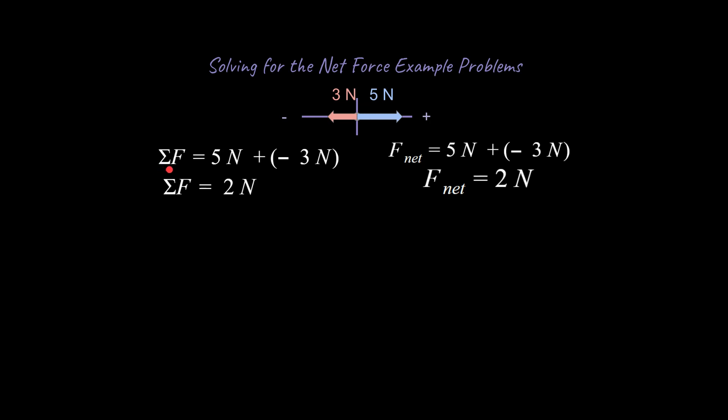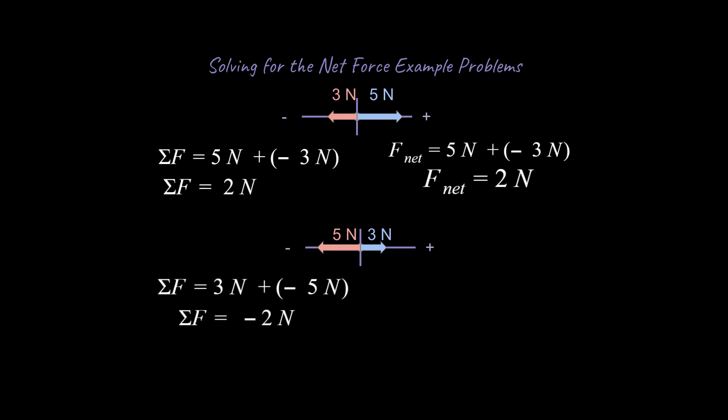The sigma symbol just means 'the sum of' — so sigma F means the sum of the forces. Now let's try another example: if we switch it up and have a negative five newton force and a positive three newton force, the net overall force works out the same way using either notation. Both ways of writing it mean the same thing — it's just a preference. It's important to know what's happening in the x-axis and y-axis in terms of net force.